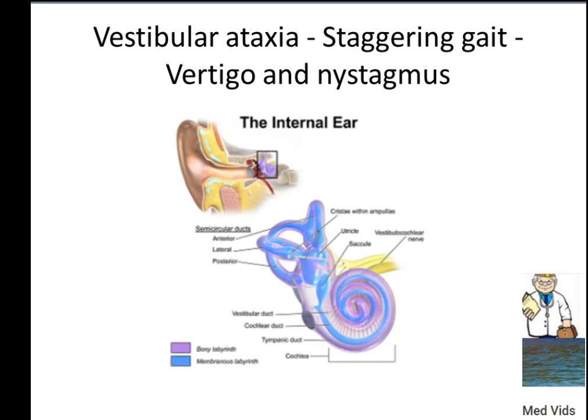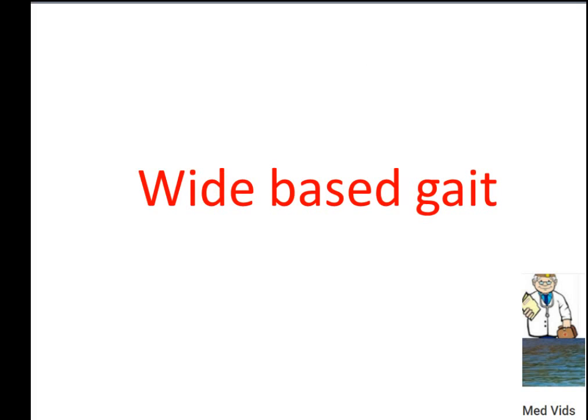Vestibular ataxia is a staggering gait. It involves the vestibular nerve, and the patient will have vertigo and nystagmus. Think of it as related to an ear problem. The patient presents with a staggering gait. Before diagnosing any ataxia, think about which part of the body or organ system is involved.